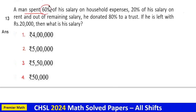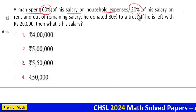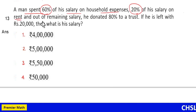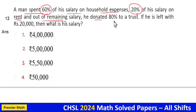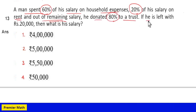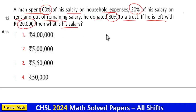A man spent 60% of his salary on household expenses and 20% of his salary on rent. Out of the remaining salary, he donated 80% to a trust. If he is left with rupees 20,000, then what is the salary?